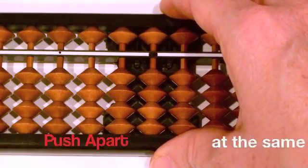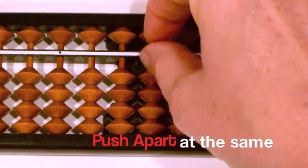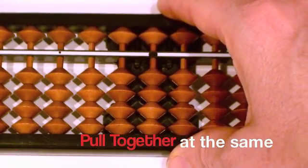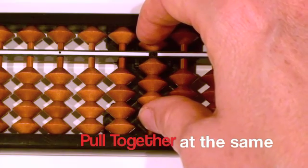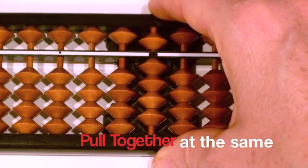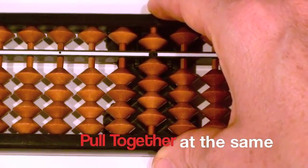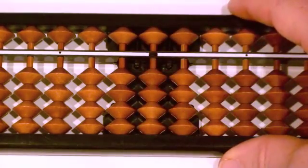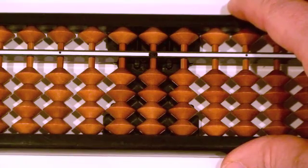If you hear push apart at the same time, that means you will push upper and lower beads apart at the same time using these same fingers. And when you hear pull together at the same time, you pull upper and lower beads toward the beam at the same time using the correct fingers. I will explain this quite a few times during the lesson, but I just want to make sure you are aware of it before we start.